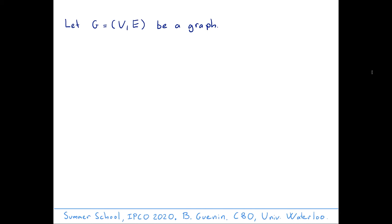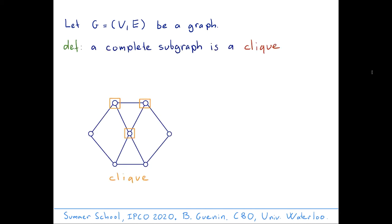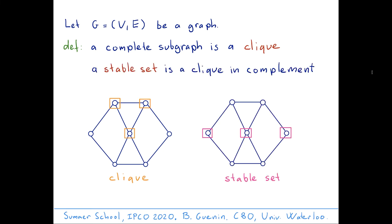Consider a graph G. We're going to define a clique to be a complete subgraph. So a clique is a set of vertices which are pairwise adjacent. A stable set is a set of vertices which are pairwise non-adjacent, or equivalently, a stable set is a clique in the complement graph.